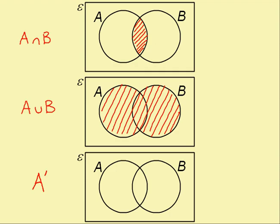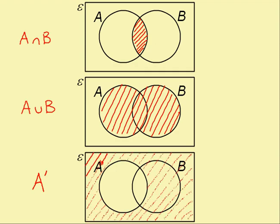So, shading this on the diagram would look like this. You'll see that I've shaded everything that's outside of the A circle.